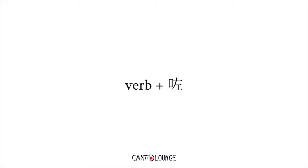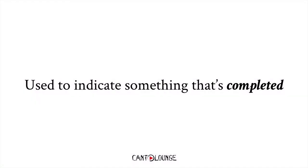Let's have a look at how you use it. Very simply, you just add 著 after the verb. These aspect markers that you'll hear in Cantonese are usually a single word or maybe a two-character word that you add before or after the thing it's attached to — in this case, after the verb. You use this when you want to indicate something that's completed — an action that has completed. Just remember that 著 means completed.